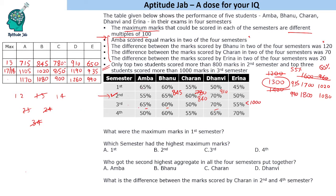If we consider first and fourth or first and second having equal marks, the percentages in 1st semester are 65% and 50%. For the marks to be equal, the maximum marks must be in the ratio 11 to 13. So we need the max marks of those two semesters in the ratio 11:13 for the actual scored marks to be equal.